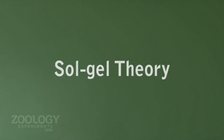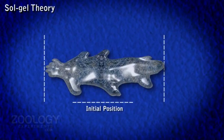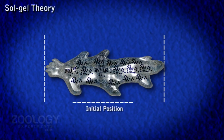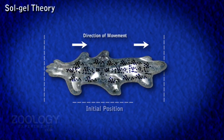Locomotion. Sol-gel theory attributes amoeboid motion to a change in the consistency of cytoplasm, based on the spontaneous sol-gel phenomenon of protoplasm. It offers the best explanation for amoeboid locomotion.